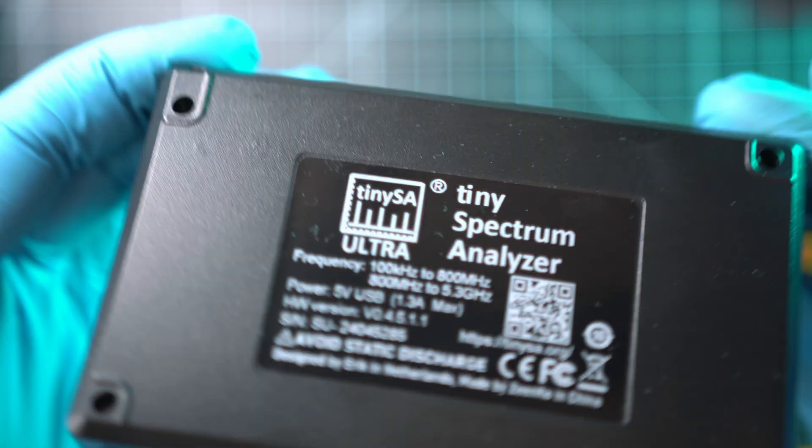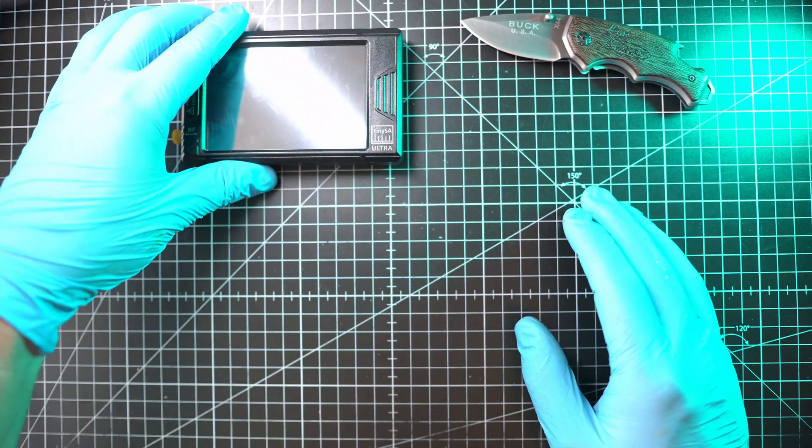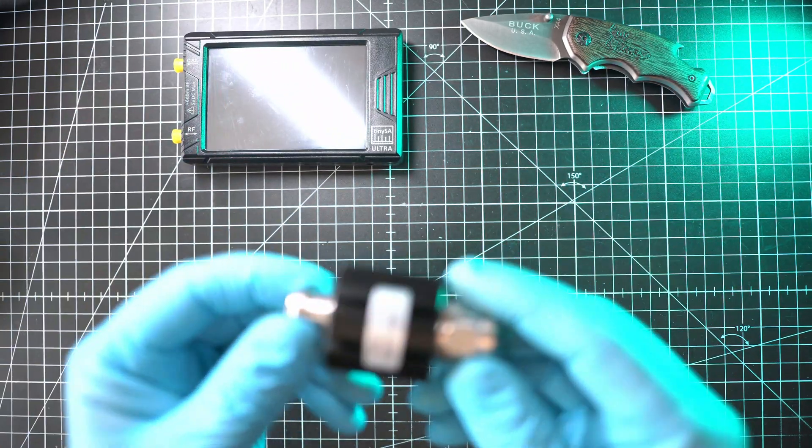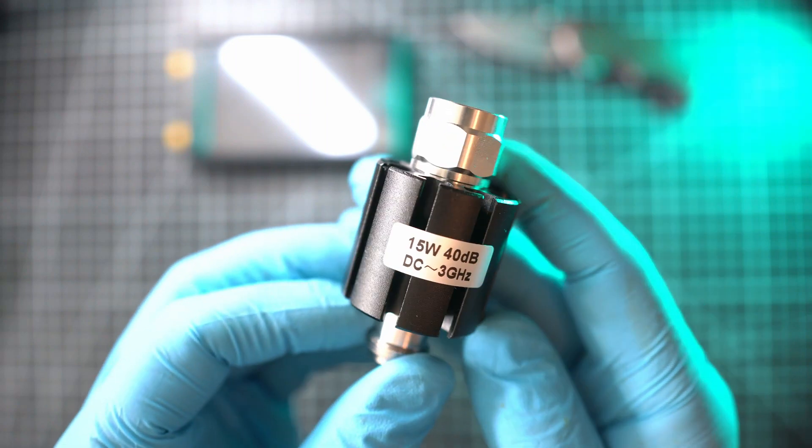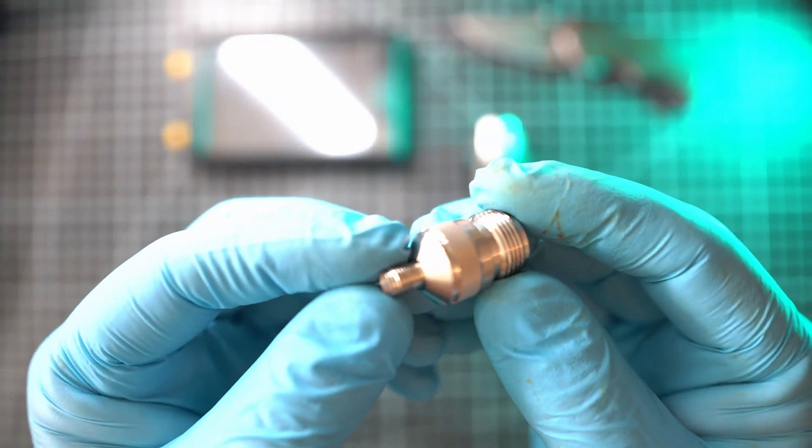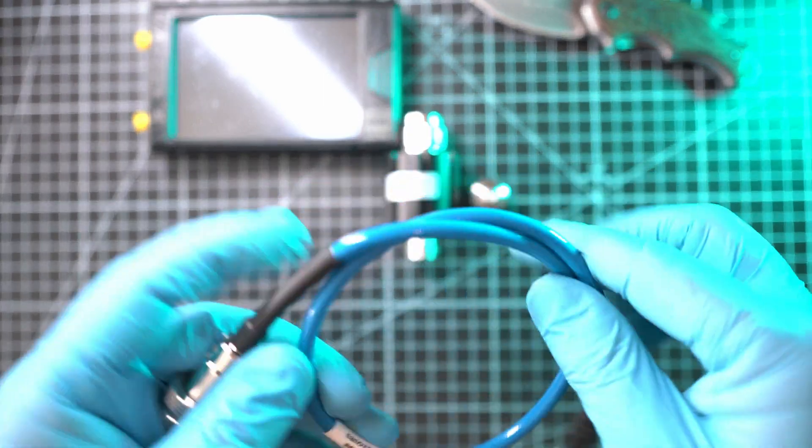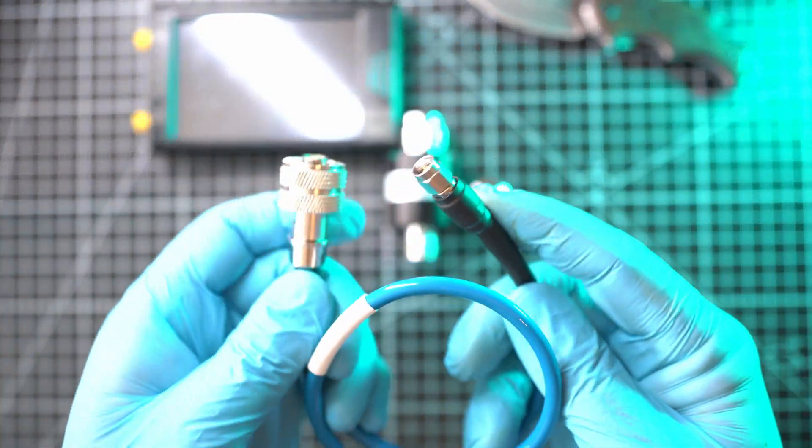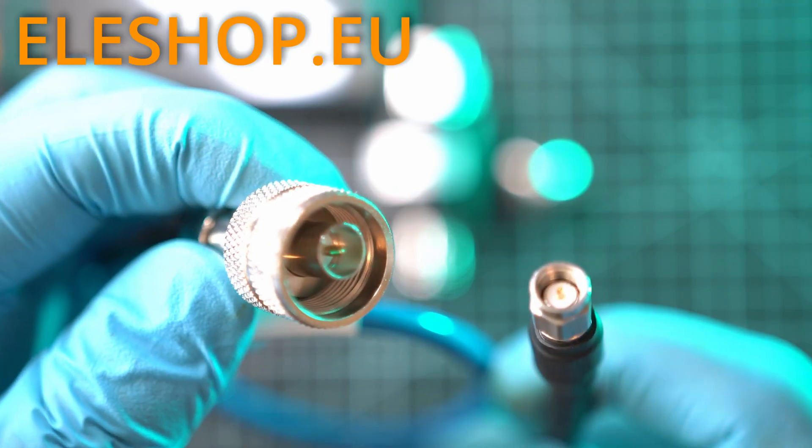This TinySA Ultra is amazing pocket-sized spectrum analyzer. But for this job, an attenuator is necessary. This is 40 dB attenuator with type N connectors. This type N to SMA adapter is also handy, along with this quality cable with type N and SMA connectors. All this came from ELEshop.eu as well.